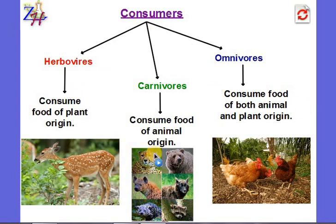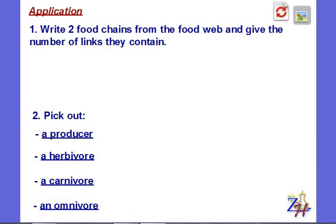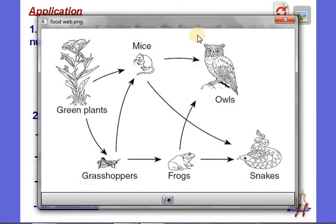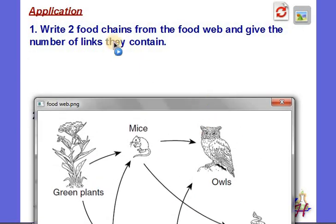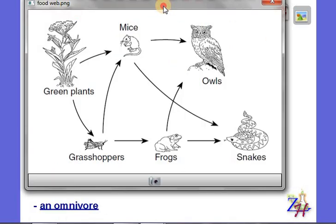Copy this concept map in your copy book — pause the video to do so. Now let's apply what we've learned. Consider this food web with green plants, mice, owls, grasshoppers, frogs, and snakes. You are asked to write two food chains from this food web and give the number of links each contains. Pause the video to solve it, then correct yourself.